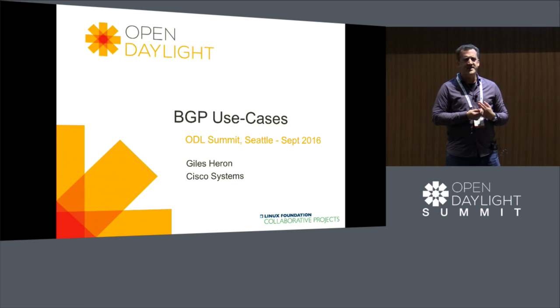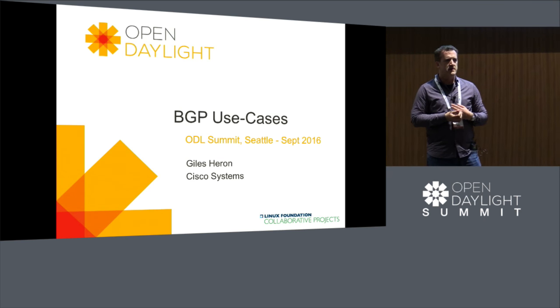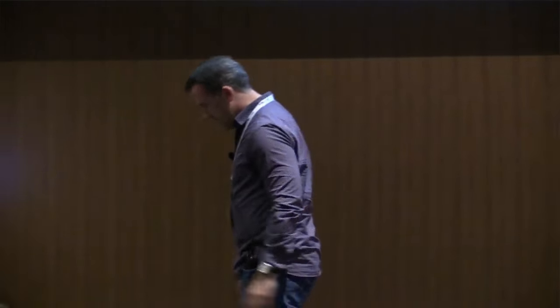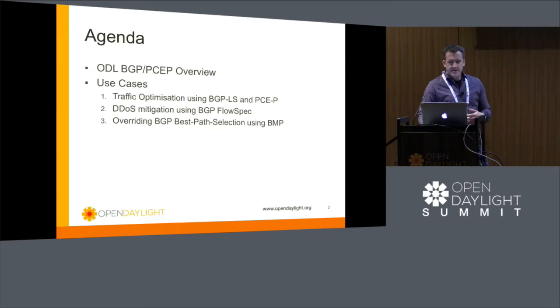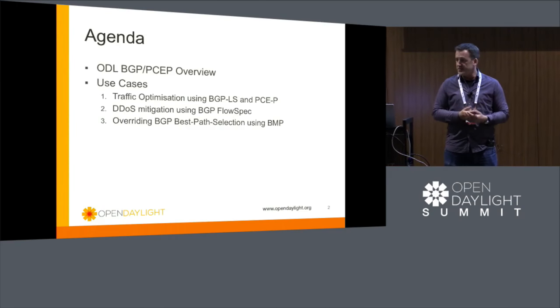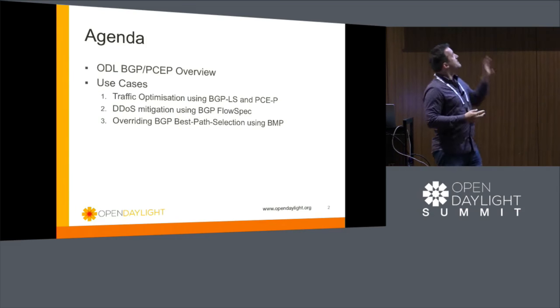I don't know if anyone was at the tutorial we did on Monday. We did a tutorial on Monday afternoon along with three of the guys from Brocade. They're coming in after this to do a talk about what's new in ODL Boron with respect to BGP. I wanted to focus on use cases that were already there as of Beryllium rather than the new stuff. I'll give a brief overview of the BGP plugin and the PCEP plugin and how the project hangs together, then look at three use cases.